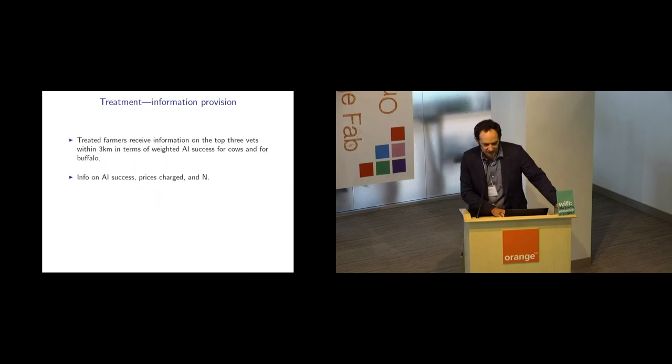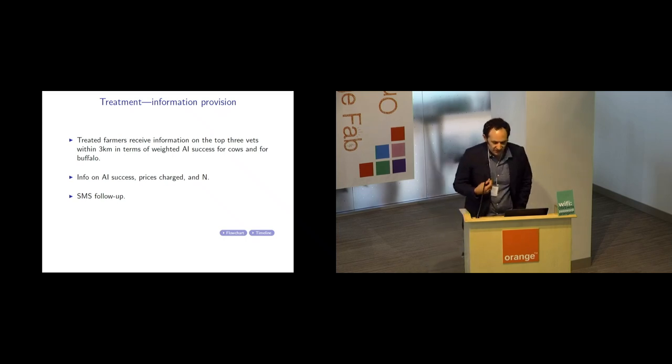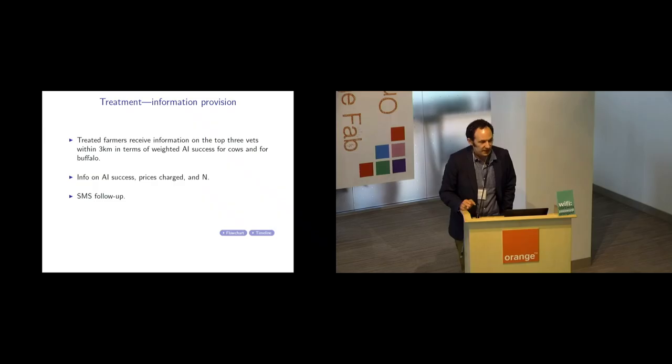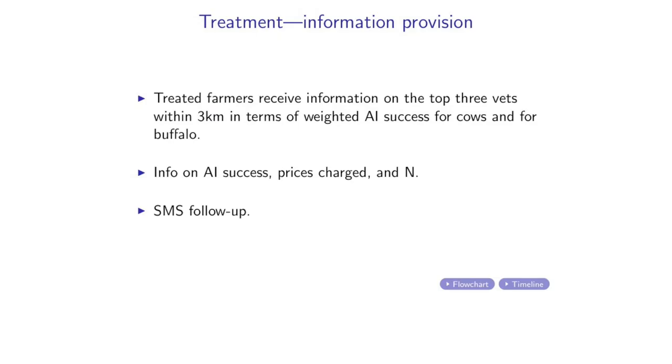So let me talk just a little bit about what information we gave out and how. Specifically, farmers that were treated with information were given information on the top three veterinarians within three kilometers of their village in terms of average AI success rate between cows and buffaloes, which is another important breed in this setting.